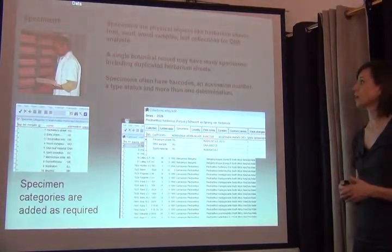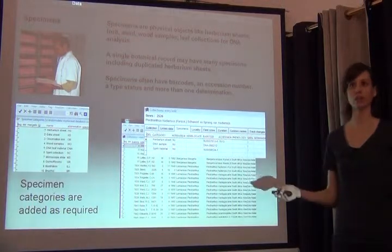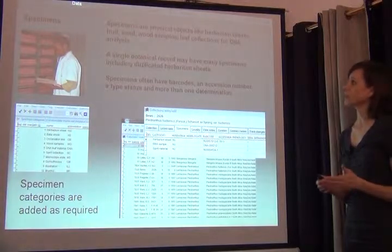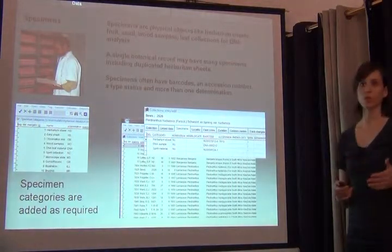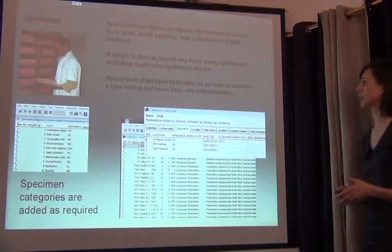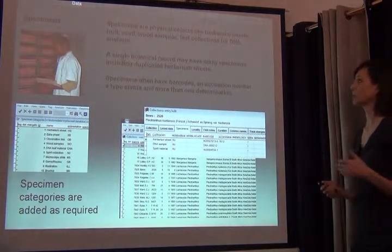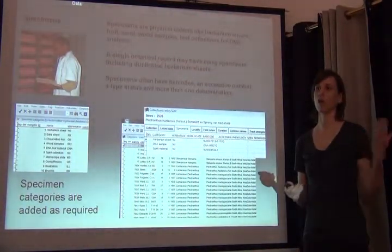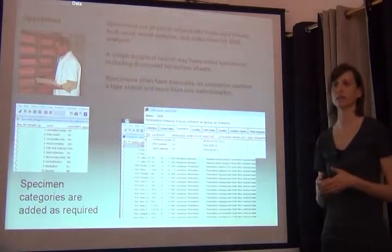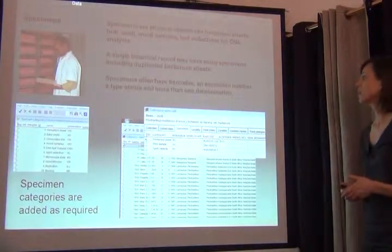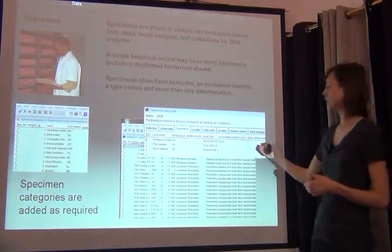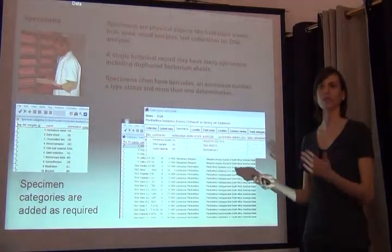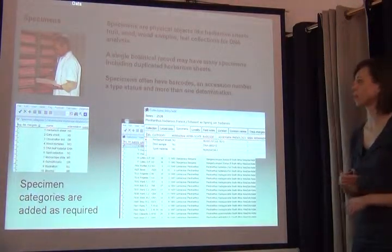The specimen module does full databasing of all the fields you would want for a specimen record — not only herbarium specimens but wood samples, leaf collections, DNA, and any DNA analyses. You can have a single record with multiple specimen types, so you might have multiple sheets or a sheet and a separate fruit, and these can all be tracked together in Brahms. You can also add more fields as required — you're not limited to what Brahms comes with.